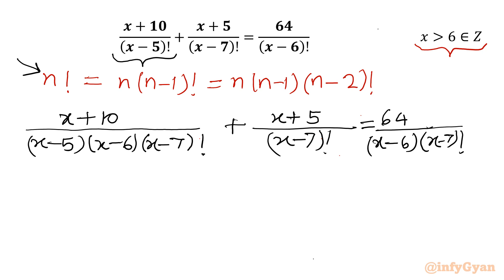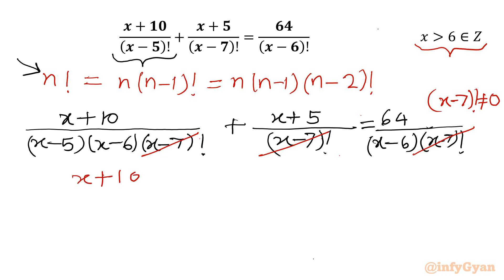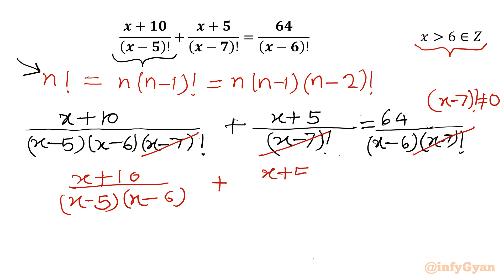Now, since x is greater than 6, (x-7)! cannot be zero. So I can cancel (x-7)! from all three denominators. The equation becomes (x+10) / [(x-5)(x-6)] + (x+5) = 64 / (x-6).